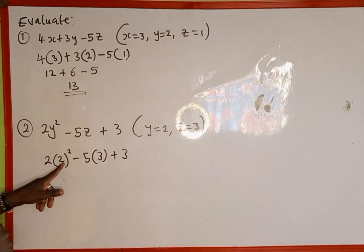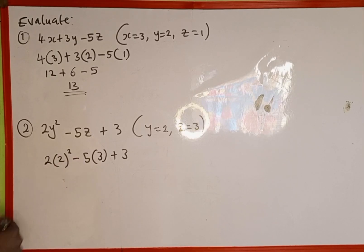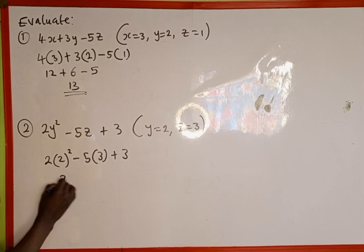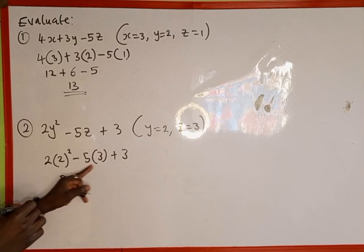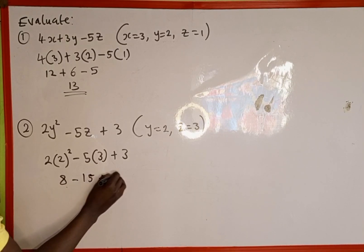Now we simplify. 2 raised to the power of 2 is 2 × 2 = 4, then 4 × 2 = 8. Then minus 5 × 3 = 15, plus 3.